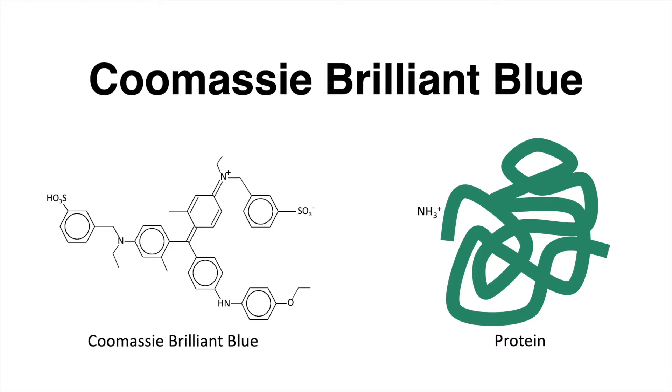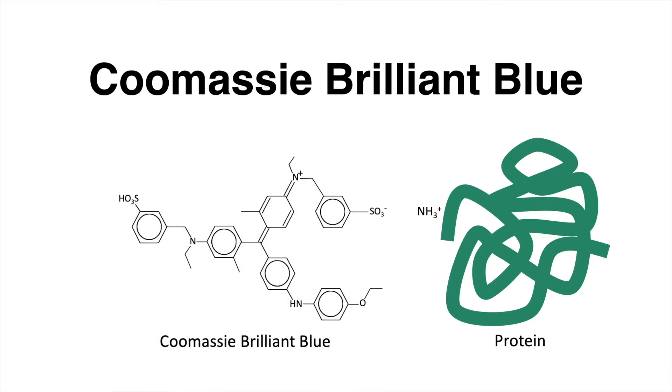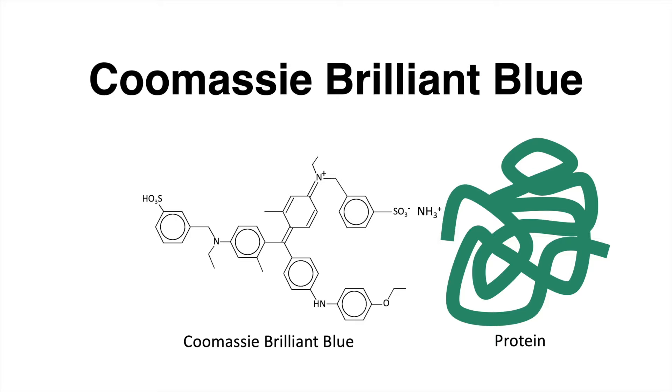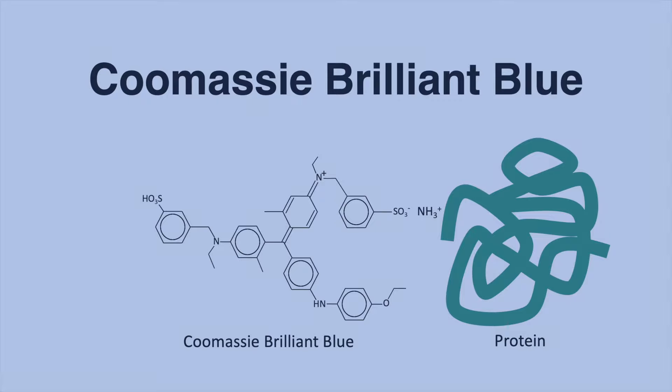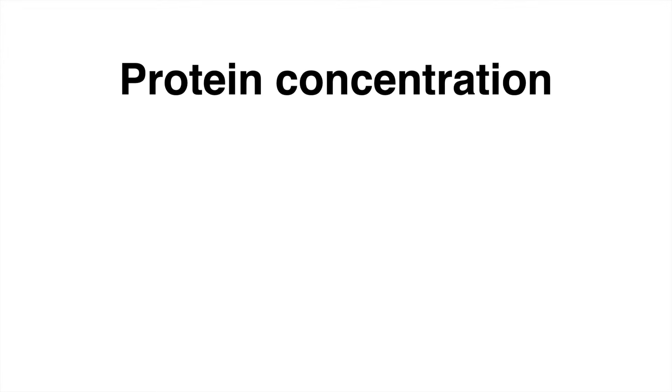The sulfonic acid groups of the dye interact with the positive amino groups of the protein found in basic amino acid residues present in lysine, arginine, and histidine. This results in a stable form of the dye and the color turns blue after dye-protein complex formation. But how